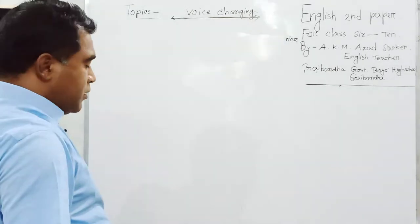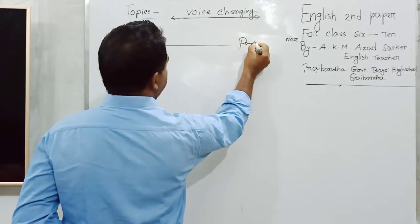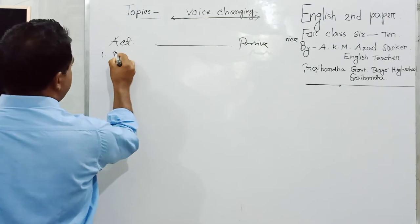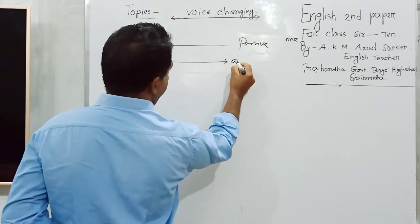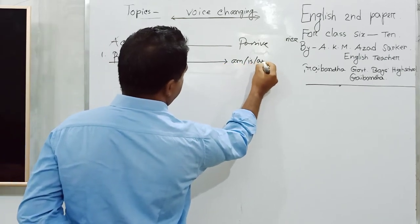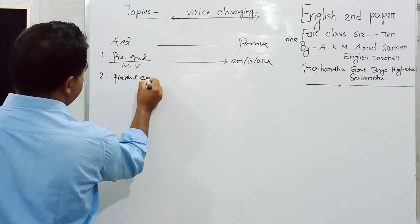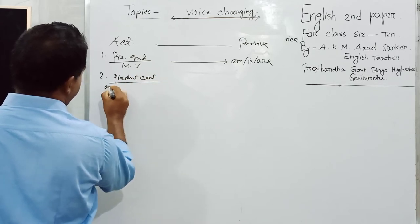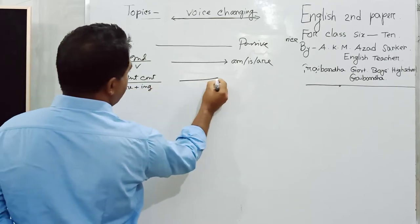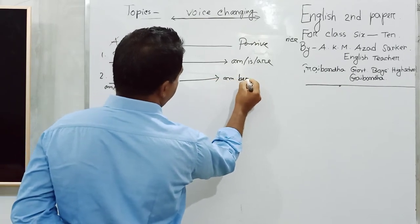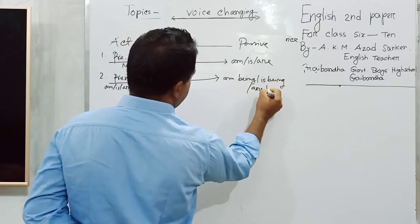Suppose if you see present indefinite tense, that means main verb. Here you must use is or are for present tense. For present continuous tense, that means am, is, are plus -ing. Here you can use am being, is being, are being.